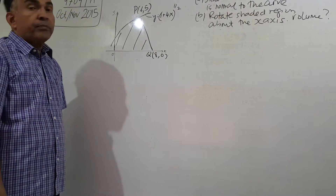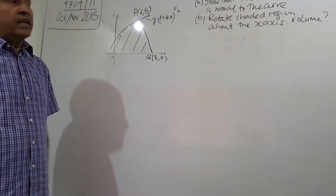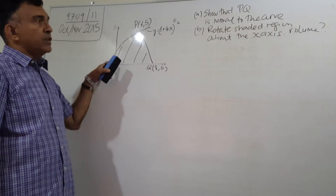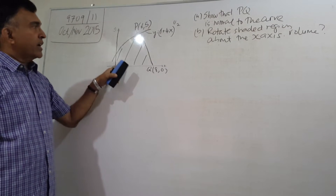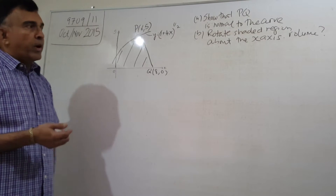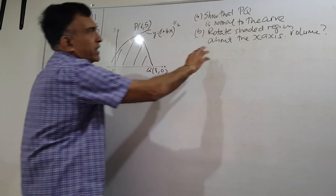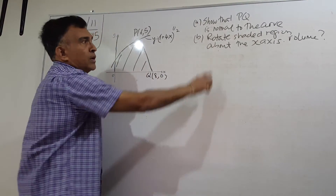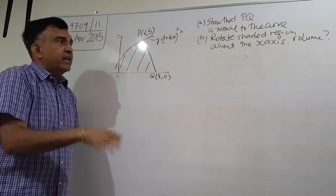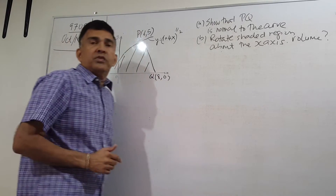In part B of this problem, we are asked to find the volume when you rotate this shaded region 2π radians, or 360 degrees, about the x-axis. You rotate one full turn above the x-axis, and you are asked to find the volume generated.